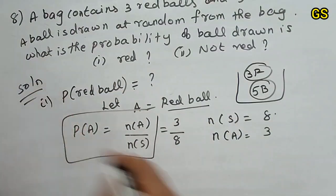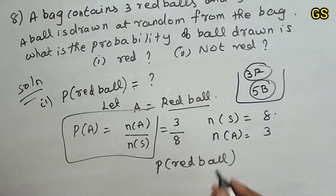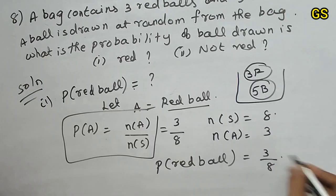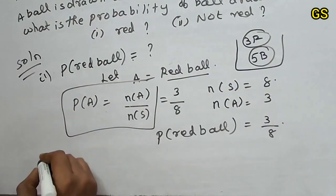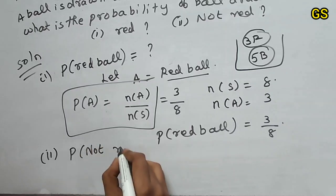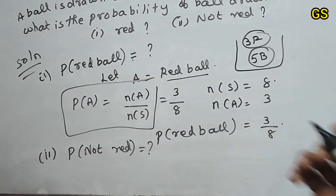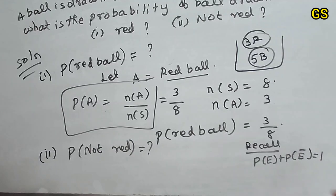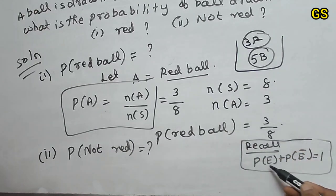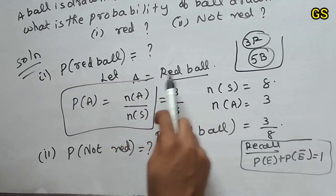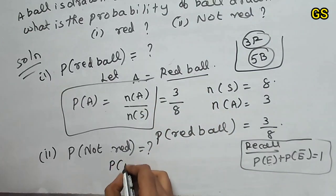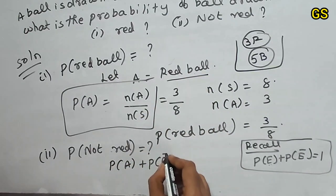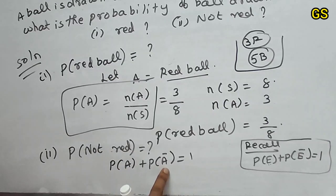For the second subdivision, we find the probability of not red ball. Recall the complement rule: P of E plus P of E bar is equal to one. Here, A represents red ball and A bar represents not red ball. So P of A plus P of A bar equals one, which gives P of A bar equals one minus P of A.